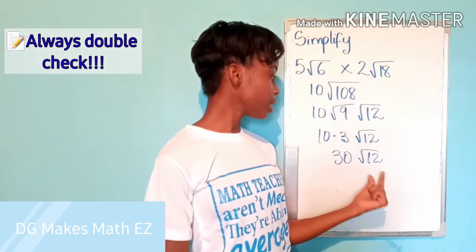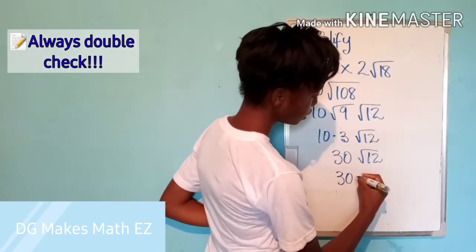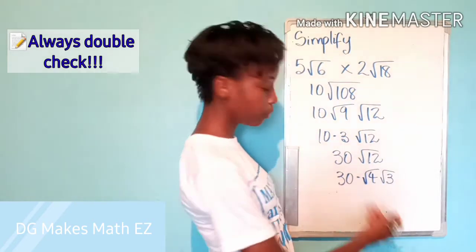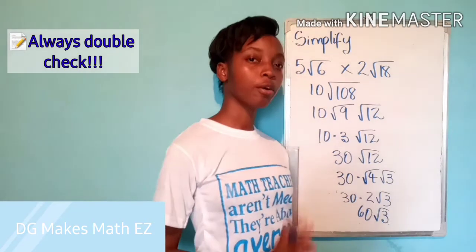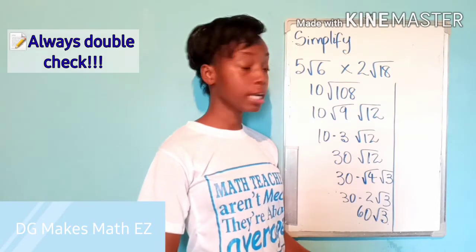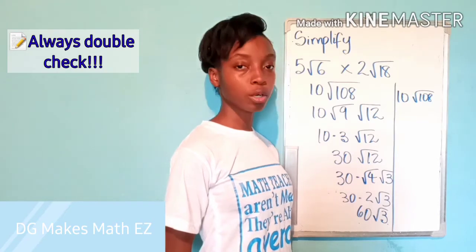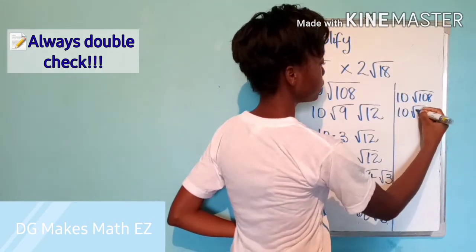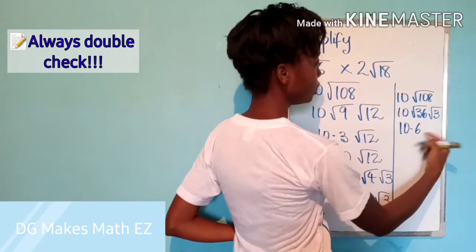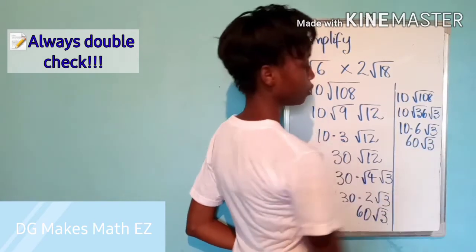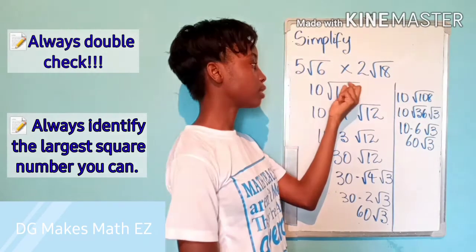Are we done? No, because 4 is also a square number that is a factor of 12. So we have 30 times root 4 times root 3. The square root of 4 is 2, so this gives us 30 times 2 root 3, which is 60 root 3. We could have saved time by picking the bigger square factor 36 out of 108 directly: root 36 times root 3, with square root of 36 being 6, gives 10 times 6 times root 3, which is 60 root 3. In simplifying, always look for the biggest square number factor of the radical.